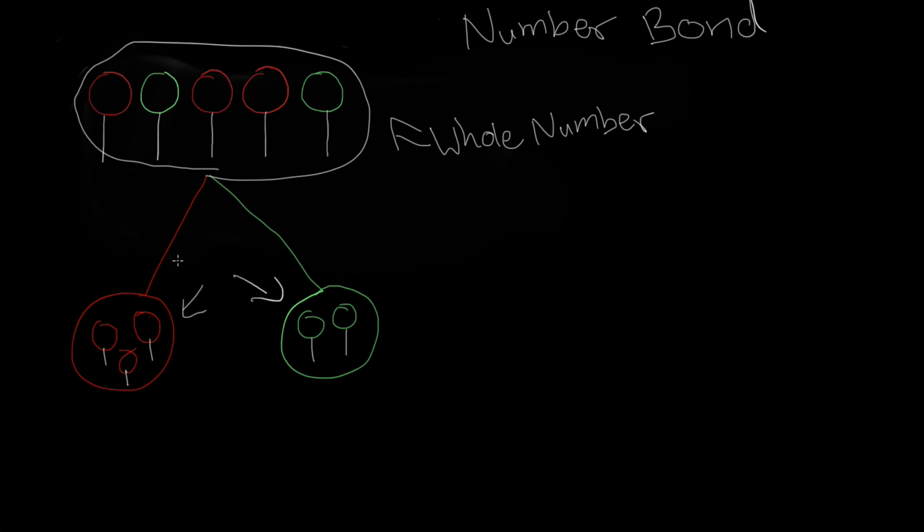A number bond also has two parts. These are called parts because they each contain part of the whole number.